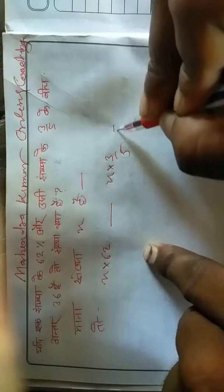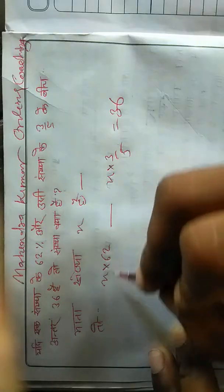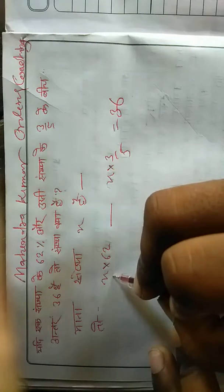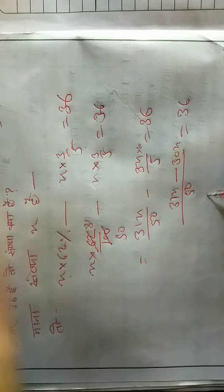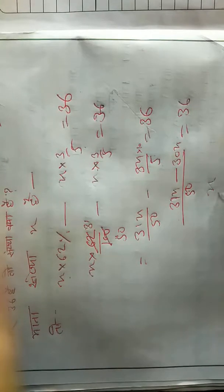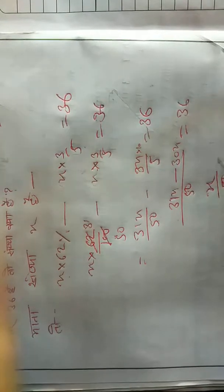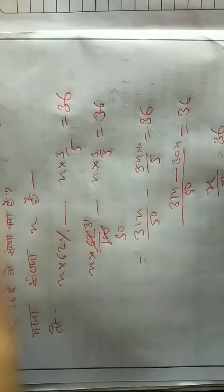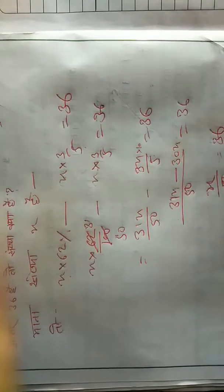एक संख्या के 62% और उसी संख्या के तीन बटे पांच के बीच का अंतर 36 है, तो संख्या क्या है? माना संख्या x है।